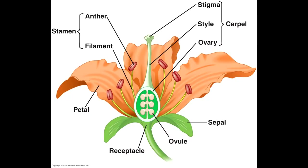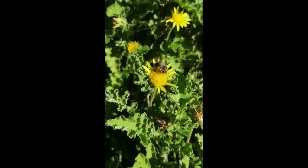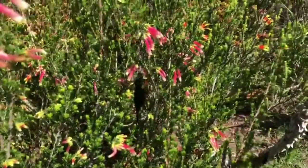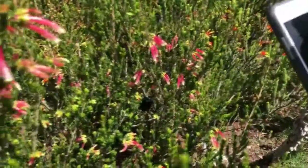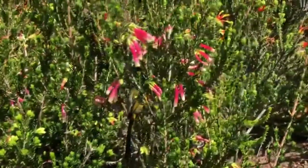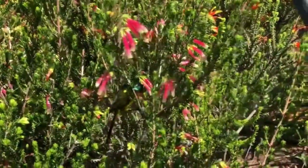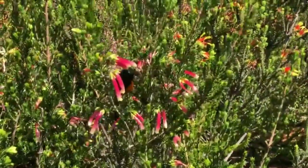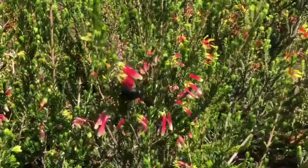For angiosperms to reproduce, pollination must occur. This happens when insects or birds get nectar from a flower; as they do this, they pick up pollen, which is then transferred from flower to flower. Wind can also help move pollen from one flower to another. The reason angiosperms have coloured flowers and distinctive scents is so that they can attract pollinators more easily.